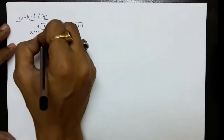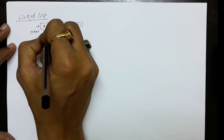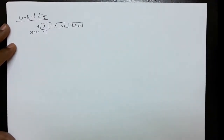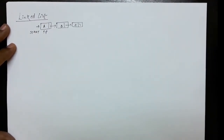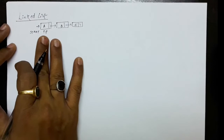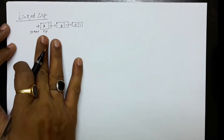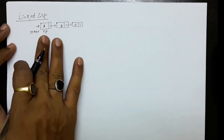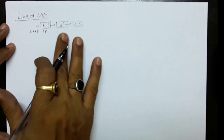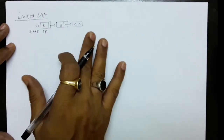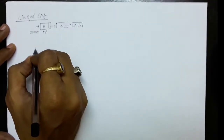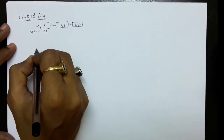For doing the traversal, what we used to do: we used to take a pointer P at the first node, and by the time P does not become null, we were progressing P to point to the next node. The similar method would be used here.